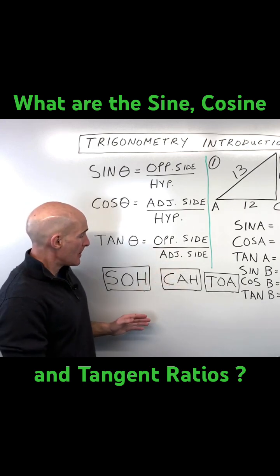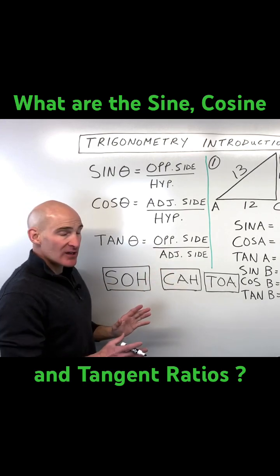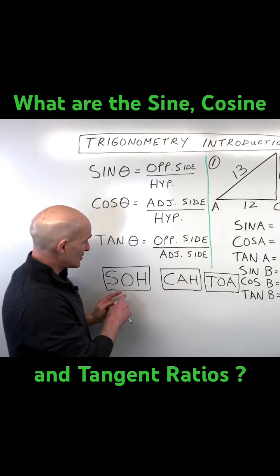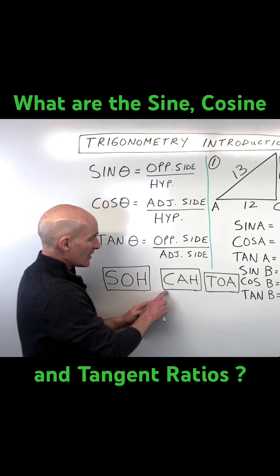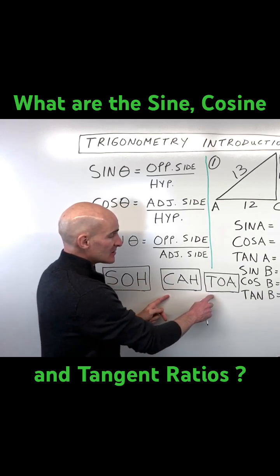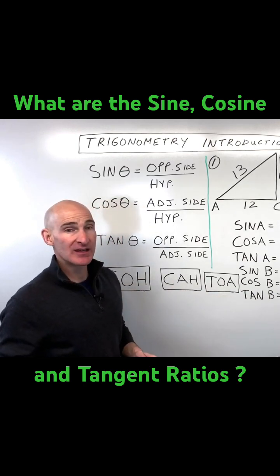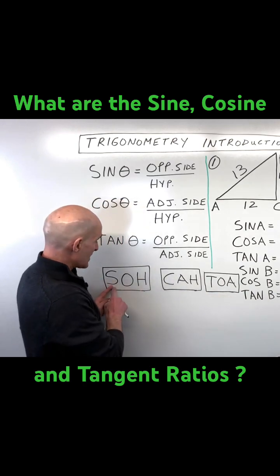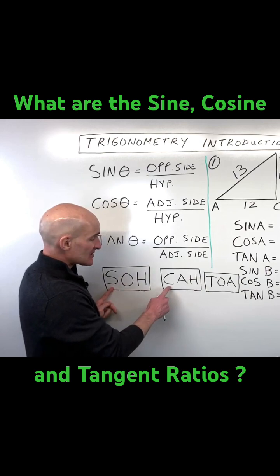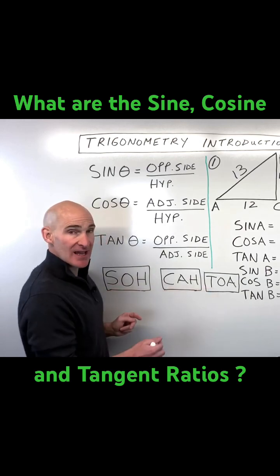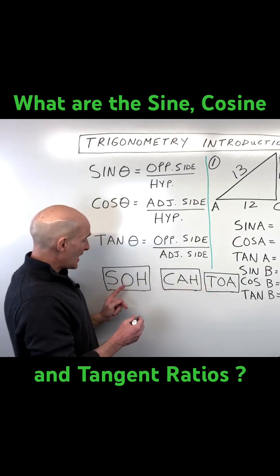An acronym that can help us remember this is SOHCAHTOA. The way I like to think of it: S is for sine, C is for cosine, and T is for tangent.